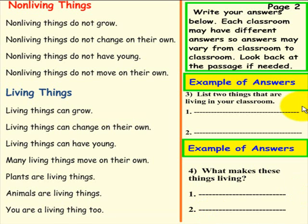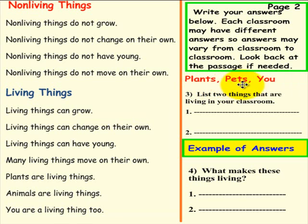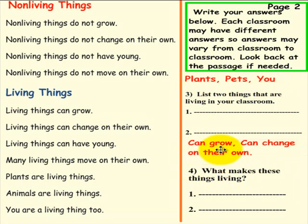Okay, here's what we have as answers. Number 3: List two things that are living in your classroom. We said plants, pets, and you. Your answers could have more or be varied from ours. Question 4: What makes these things living? Our answers: they can grow, can change on their own. Again, you could have had different answers. If your answers are the same as ours or better, that is truly fantastic.